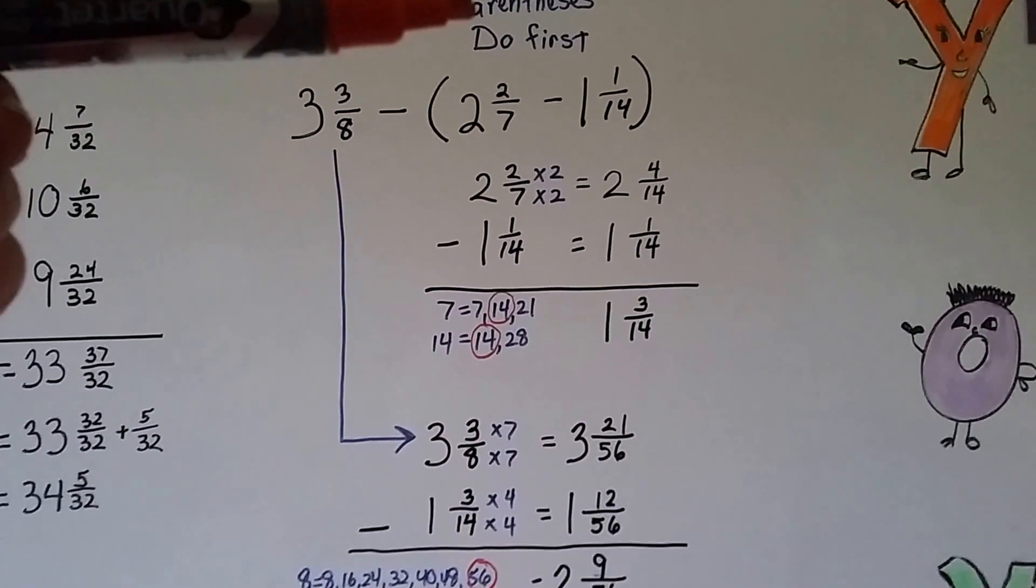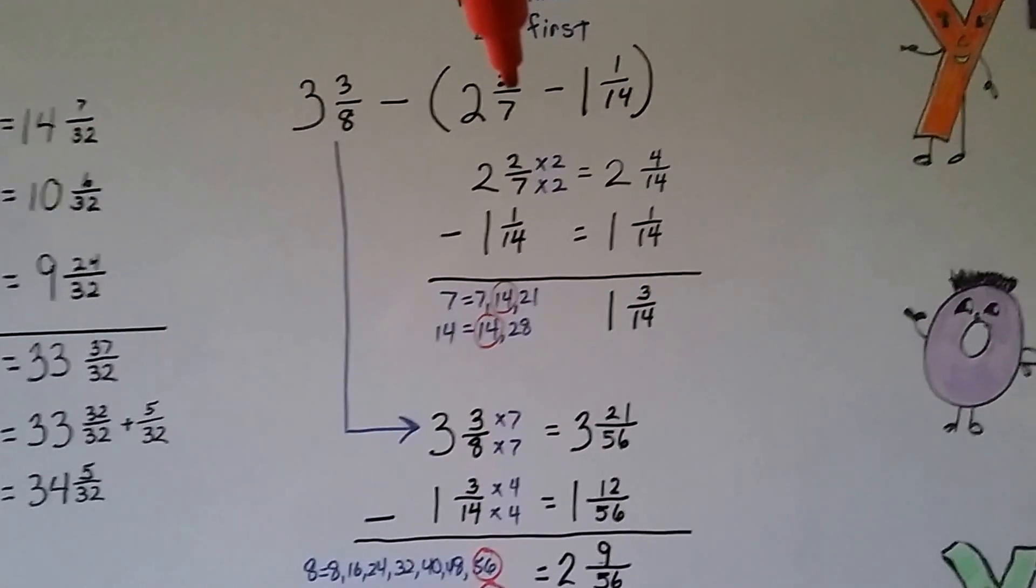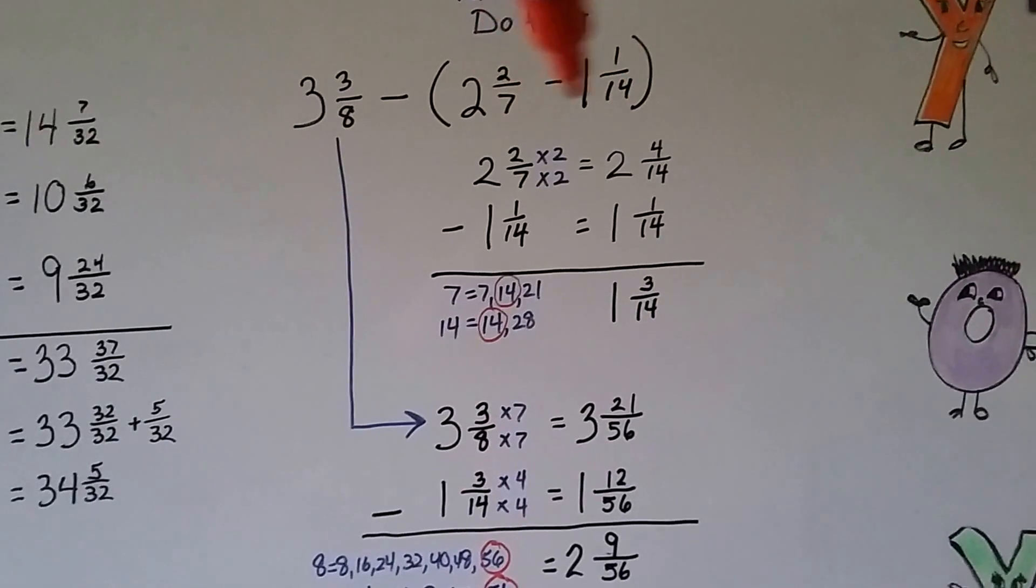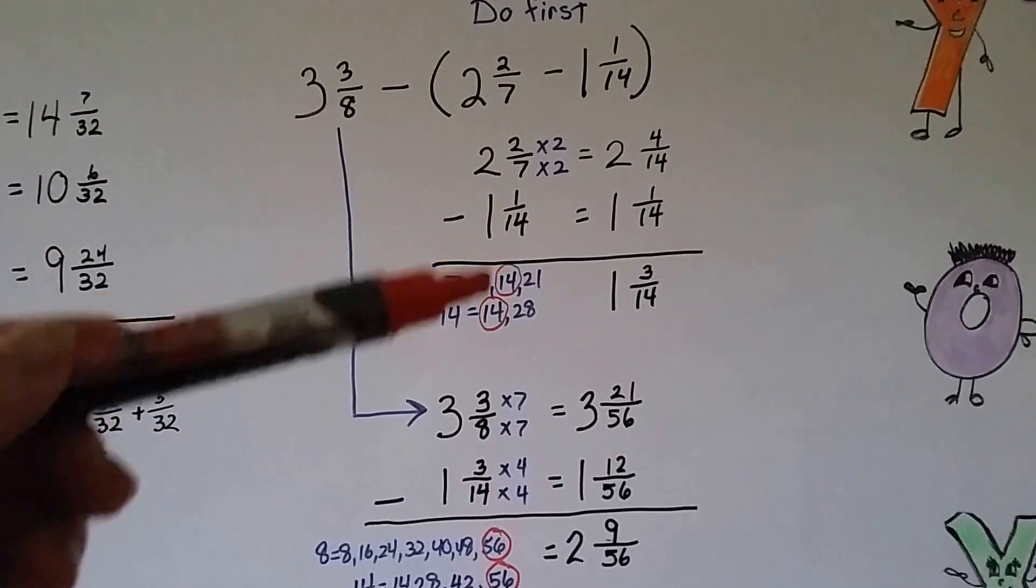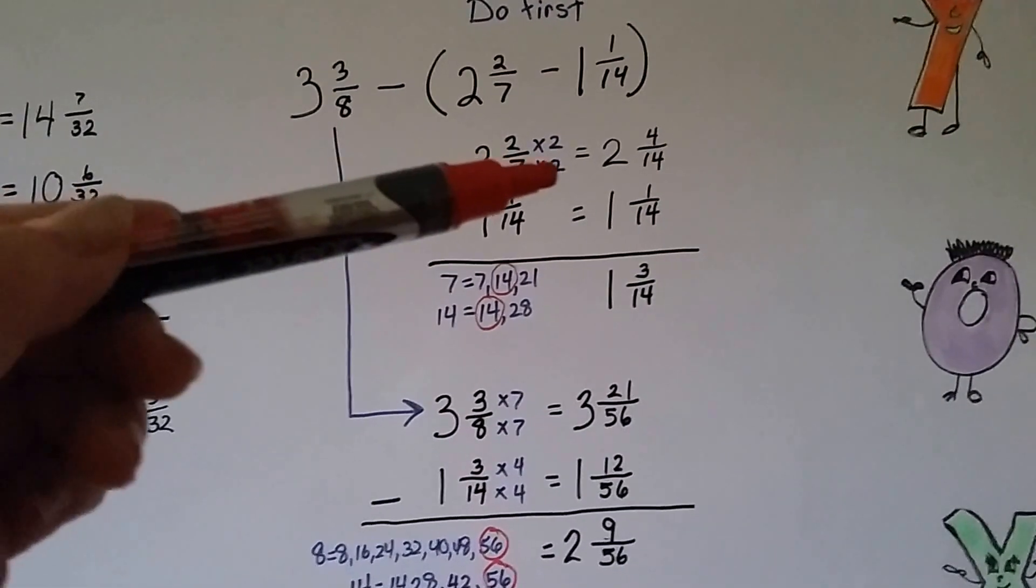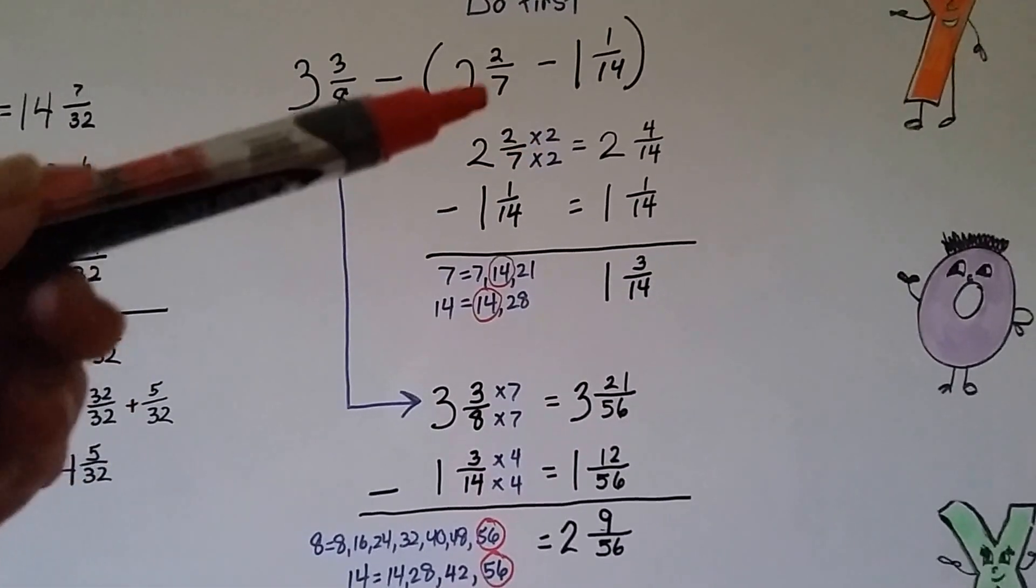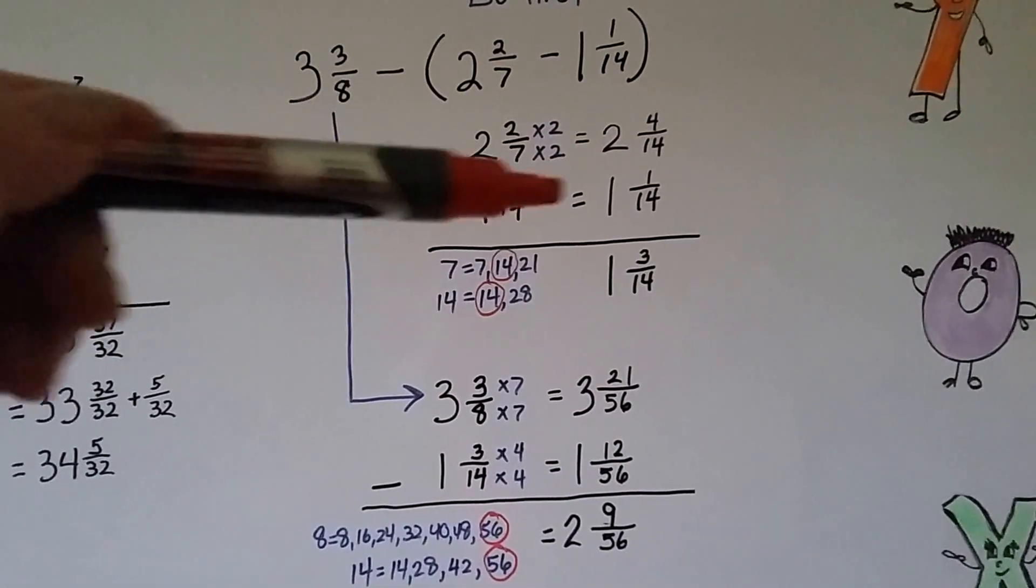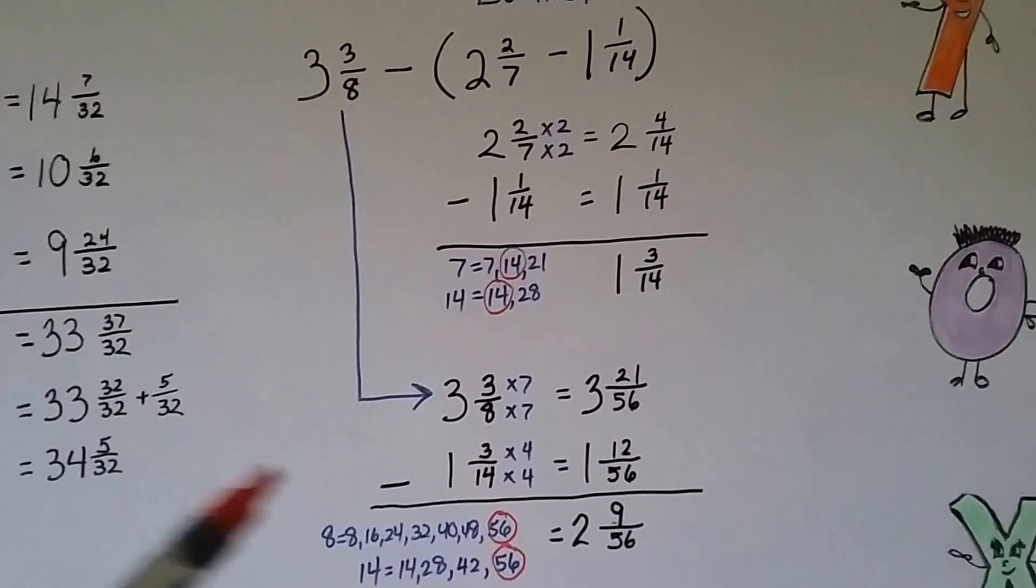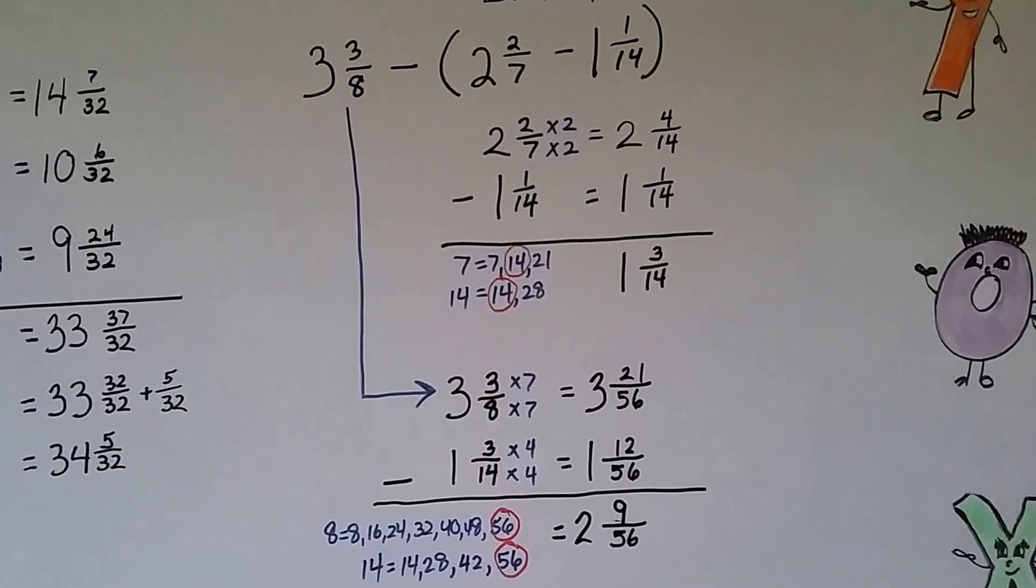Well, we know we do the parentheses first. So what we're going to do is we're going to find a common denominator for the 7 and the 14. And they can meet at 14. The 7 needs to be multiplied by 2. So we do the numerator also. So now we have 2 and 4 fourteenths minus 1 and 1 fourteenth. That's going to give us 1 and 3 fourteenths.